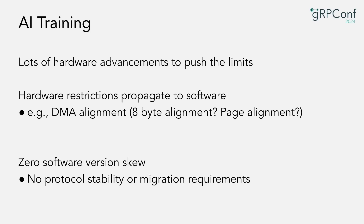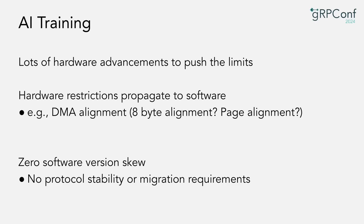As people try to eke more out of their workloads and machines, there have been hardware advancements pushing things to the limit. We're trying to make things more efficient, and all of that is changing right now. Some of those hardware changes propagate all the way to software — for example, zero-copy techniques that reduce the cost of RPCs and limit needless operations.